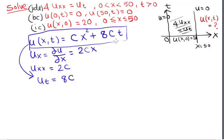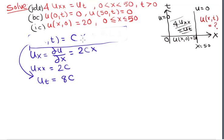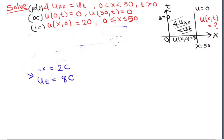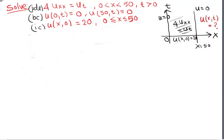This function is sometimes called a heat polynomial, but the problem is it does not satisfy the boundary conditions and initial conditions. So this is not the solution we are looking for — we want to find something different that satisfies all the boundary conditions and the initial condition.